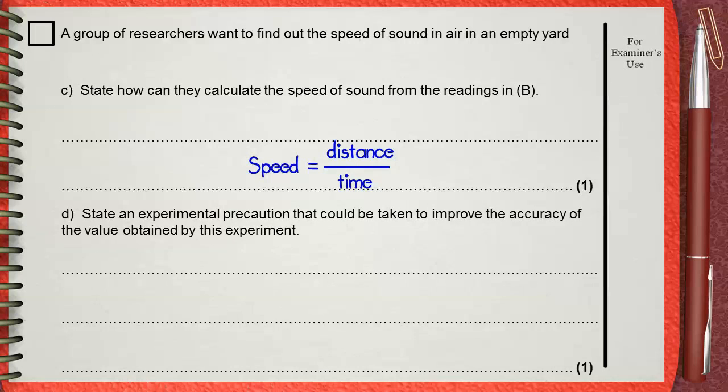Question D. State an experimental precaution that could be taken to improve the accuracy of the value obtained by this experiment. Actually, there are many precautions that can be taken here. He only needs one. For example,